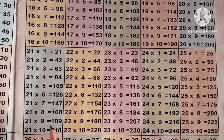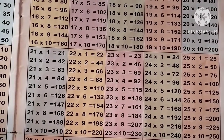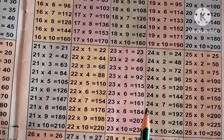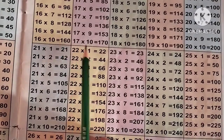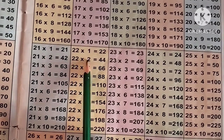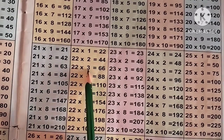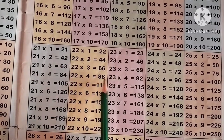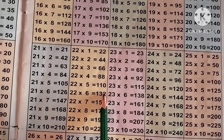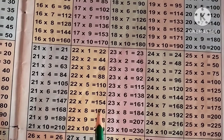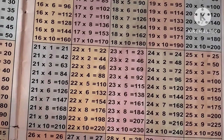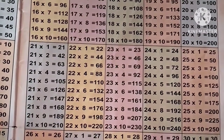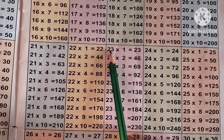Now the table of 22: 22 ones are 22, 22 2s are 44, 22 3s are 66, 22 4s are 88, 22 5s are 110, 22 6s are 132, 22 7s are 154, 22 8s are 176, 22 9s are 198, 22 10s are 220.